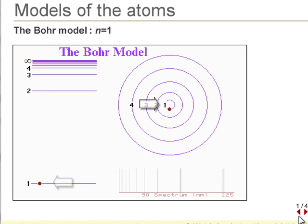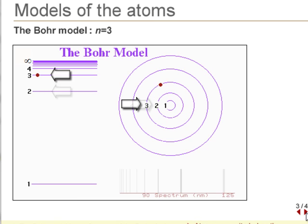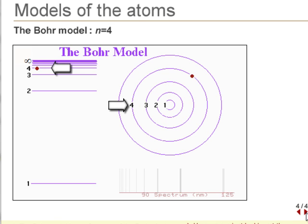The Bohr model states that electrons exist in various orbitals, and that the energy corresponds to the energy level diagram. Electrons of higher energy occupy Bohr orbitals of greater radii.